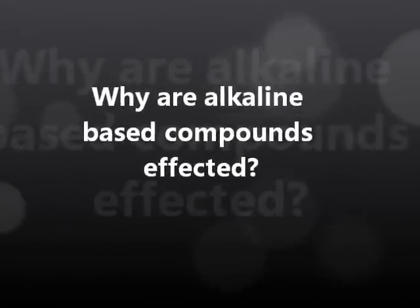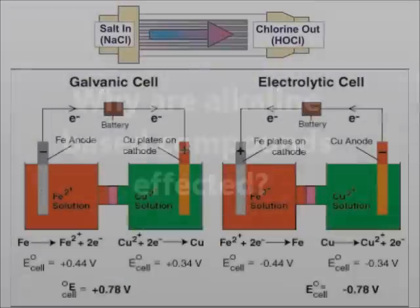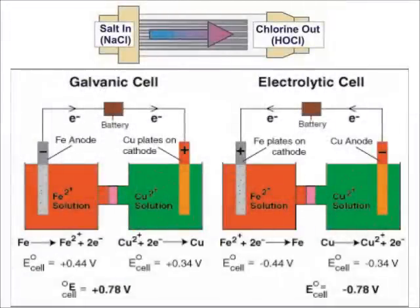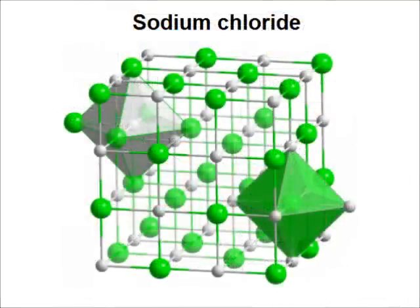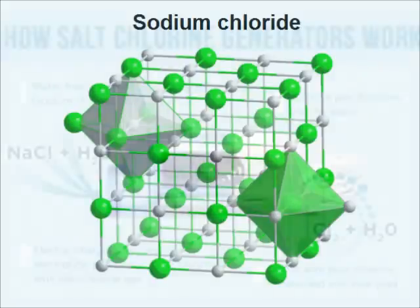Electrolytic cells or salt cells have a cathode and an anode. In the process of exchanging the salt, it is heated until it melts, and the Na+ ions flow towards the negative electrode and the Cl- ions flow toward the positive electrode.